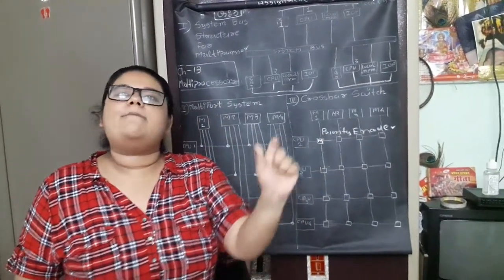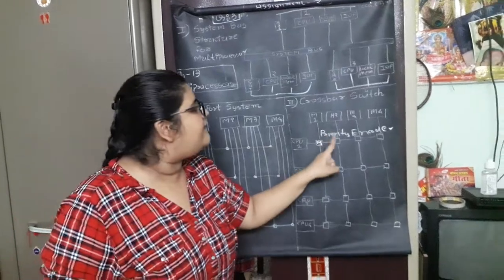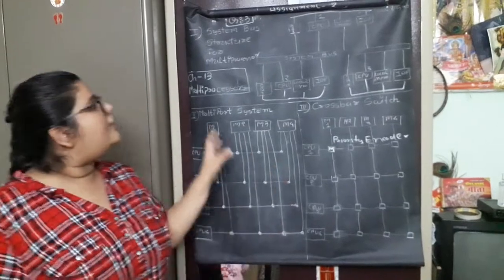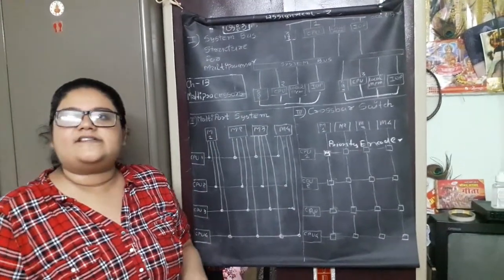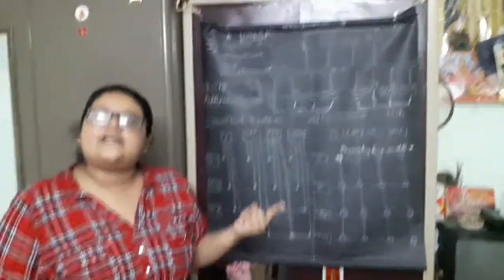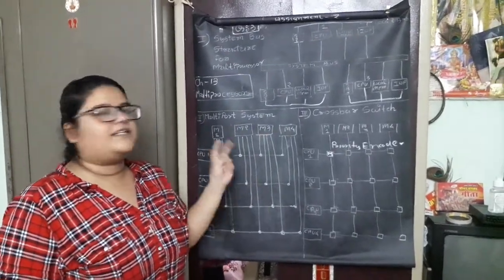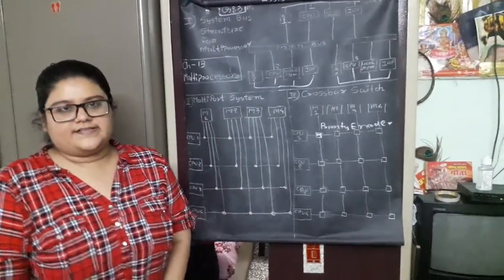Only one complex hardware we are adding over here is the priority encoder. That is nothing but the reverse of your decoder unit. Rest two strategies we will discuss next: hypercube and multi-level switch. I hope you got the idea. Thank you for listening.